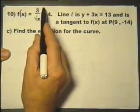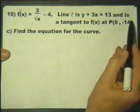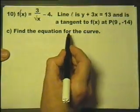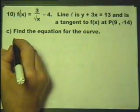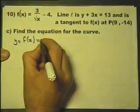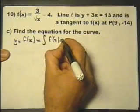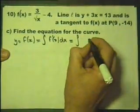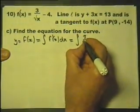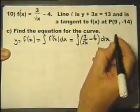I've written that down again, but I've added at the end what this coordinate of P is, because I think we might need that to do part C. Find the equation of the curve. The equation of the curve is y = f(x). But f(x) equals the integral of f dash of x with respect to x.